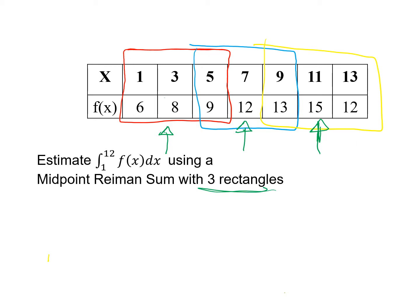Because it said use three rectangles. I've used three rectangles. So this first of all, our y value is 8. The width is 4, because I'm going from 1 to 5, and that's 4. The next point I would use is 12. And the width of that would go from 5 to 9, which would be 4. And the last one would be 15. And the width once again is 4.